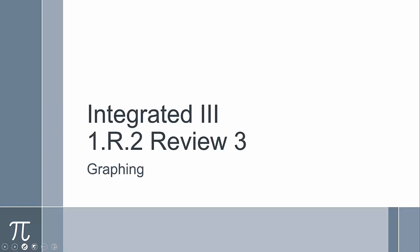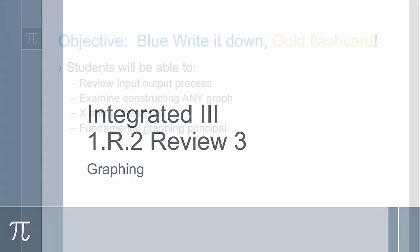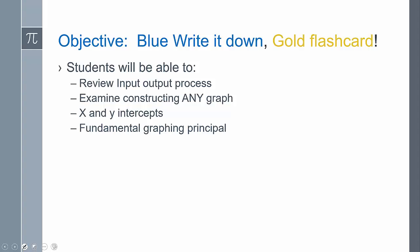This is going to be review number three. We're going to take a look at graphing. So we're going to review the input-output process. This is going to help us graph. We're going to examine constructing any graph — we don't even know what it has to look like, and we can at least sketch something of what it could look like. We're going to take a look at the x and y-intercepts and the fundamental graphing principle.